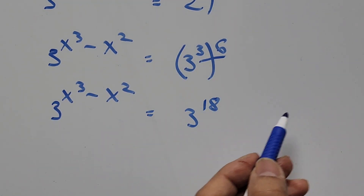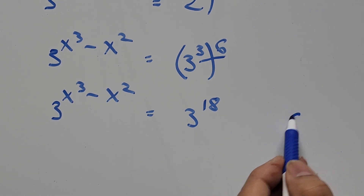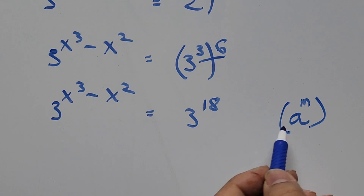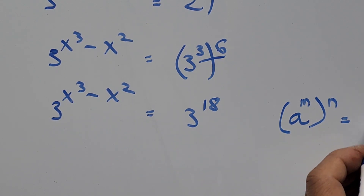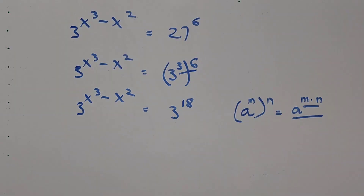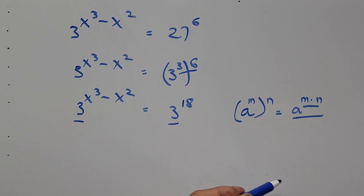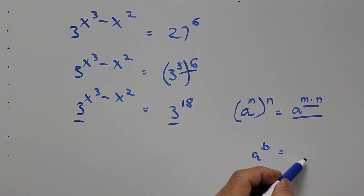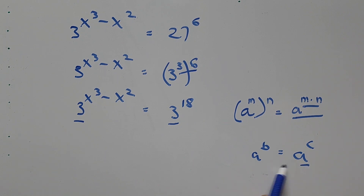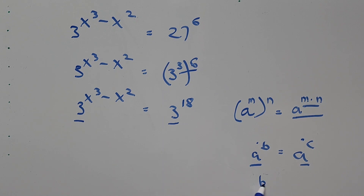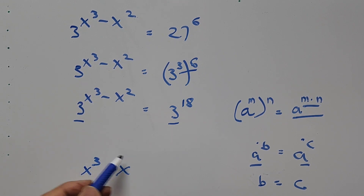Since 3 and 6 are both exponents, we multiply them: 3 times 6 is 18. This uses the exponent formula: a to the power of m, raised to the power of n, equals a to the power of m times n. Now both sides have the same base, so from the formula if a raised to b equals a raised to c, then b equals c.